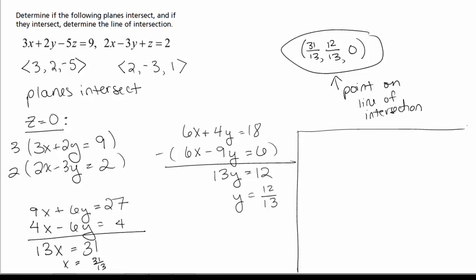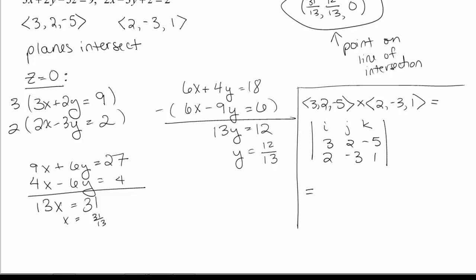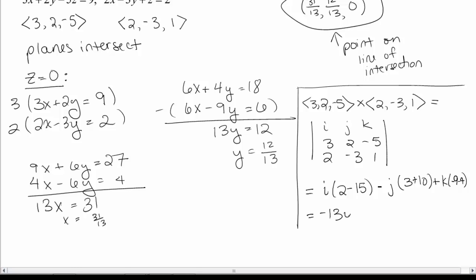So we're going to look at (3, 2, −5) crossed with (2, −3, 1), setting up the determinant with rows I, J, K then 3, 2, −5 then 2, −3, 1. This gives I times (2·1 − (−5)(−3)) = 2 − 15 = −13; minus J times (3·1 − (−5)·2) = 3 + 10 = 13; plus K times (3·(−3) − 2·2) = −9 − 4 = −13. So the result is the vector (−13, −13, −13).